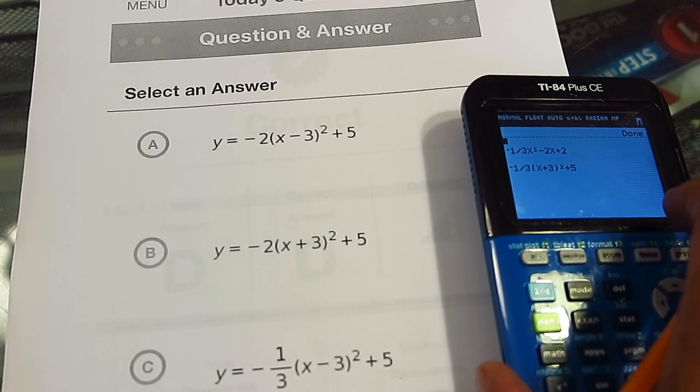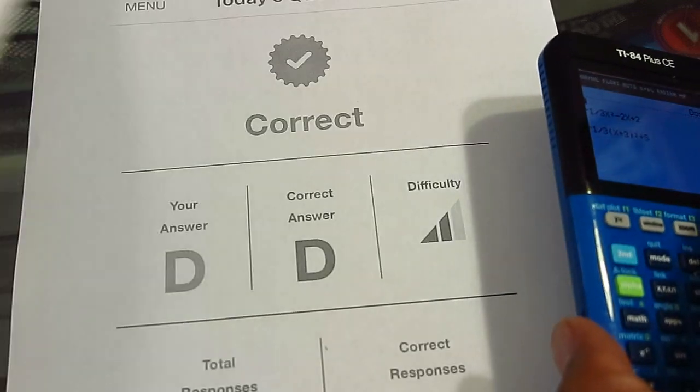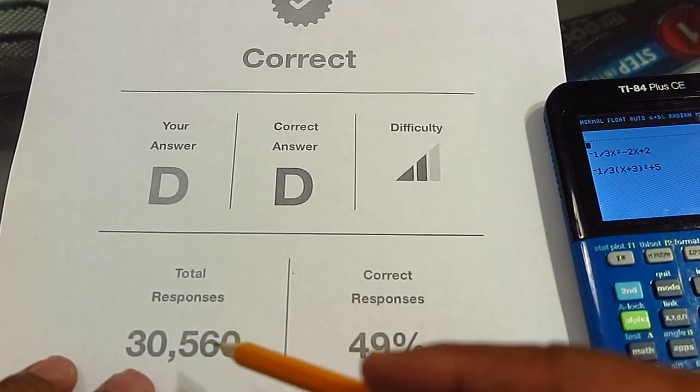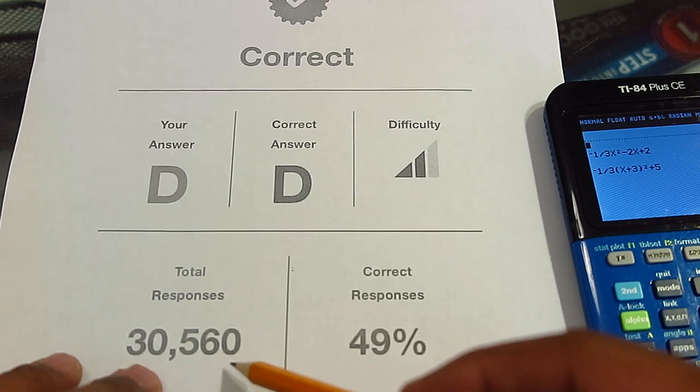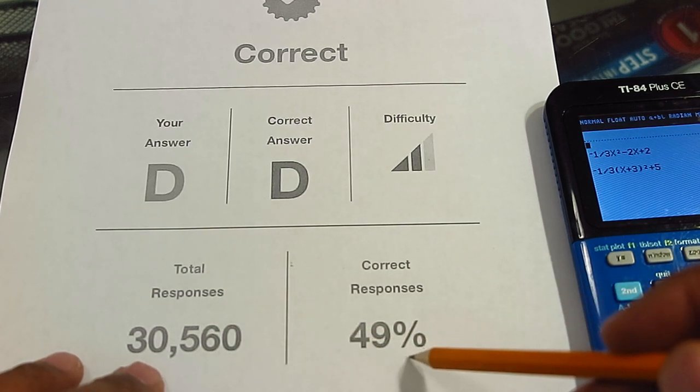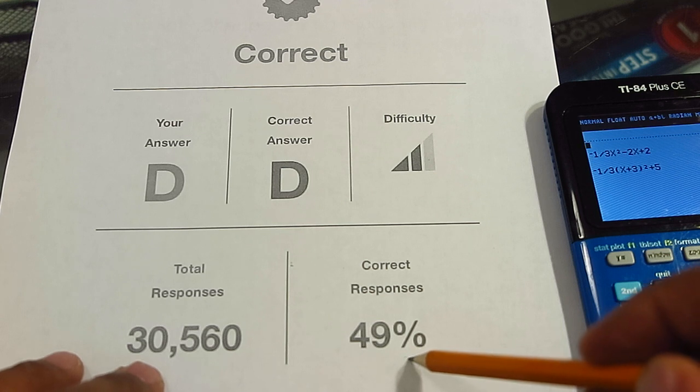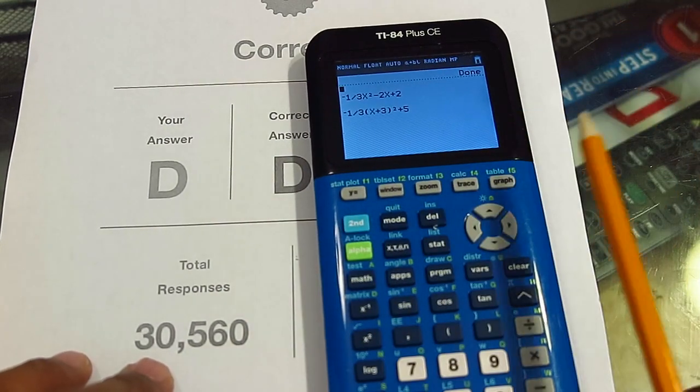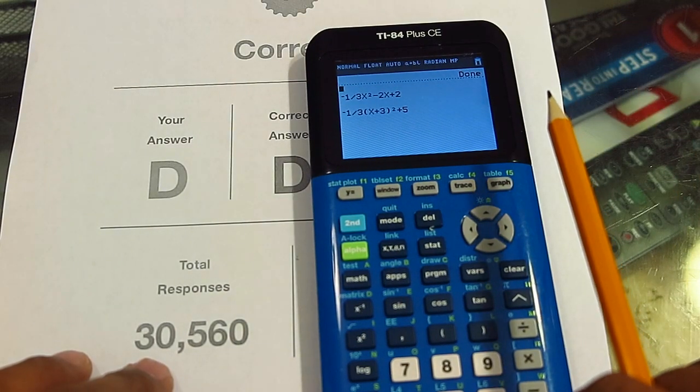I looked at the stats for this question and out of the 30,560 people who answered this question, only 49% of them got it right. That means that about 15,000 people missed this question. I'm telling you that if you have this program, there's no way that you miss it. Of course, you need to have three points.